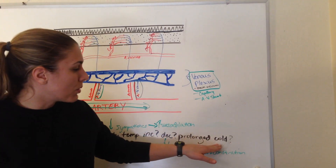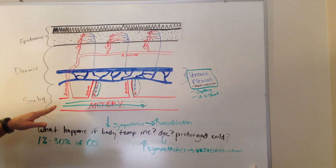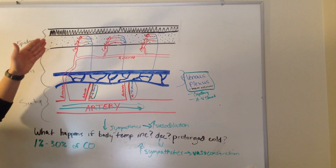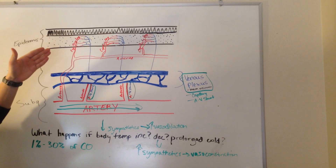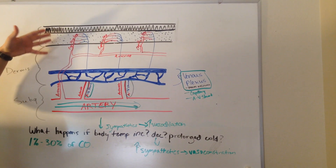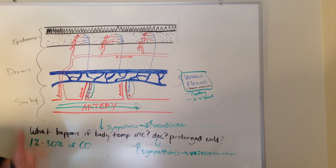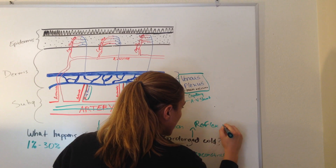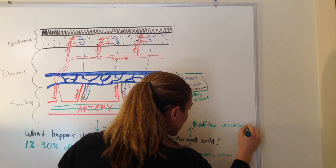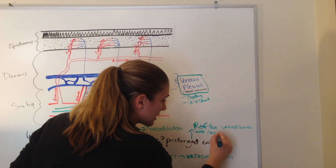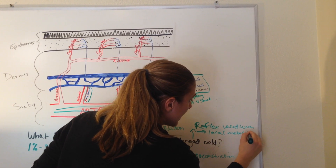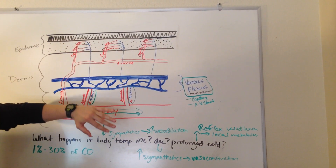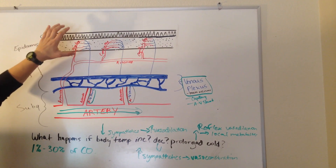Now there's also something called prolonged cold. With prolonged cold, for a while you get this increase of sympathetics. But the skin still needs nutrients, so it has to get nutritive flow back. What happens is, as this is metabolically active, after a while you do get your local metabolites. And your local metabolites cause a reflex vasodilation — that's just the body saying, I'm getting a little ischemic, I don't want to die. So you get vasodilation and you get nutritive flow again, so that your skin does not die.